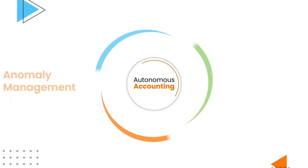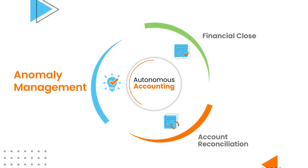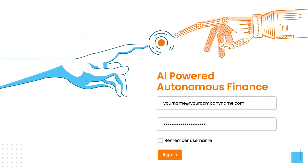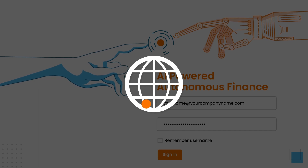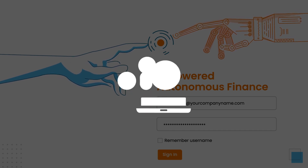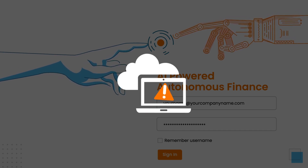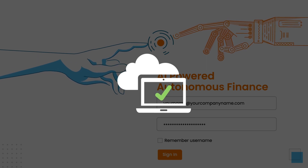Introducing HighRadius Anomaly Management. Powered by AI, Anomaly Management works with centralized transaction data, empowering accounting teams to detect and resolve critical anomalies in real time and in a few clicks.